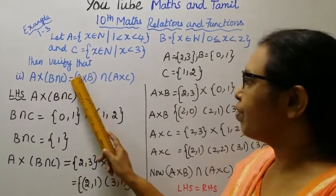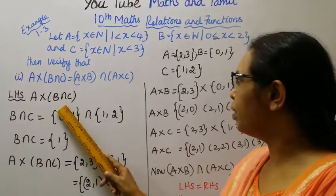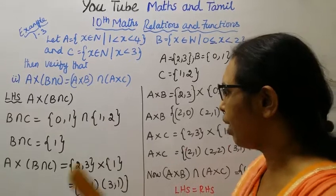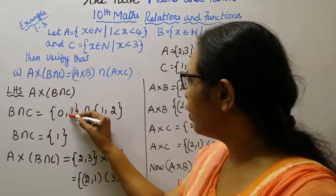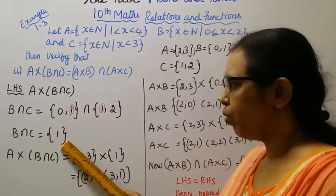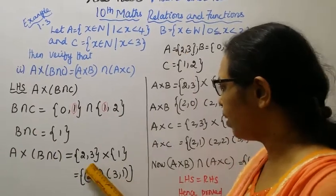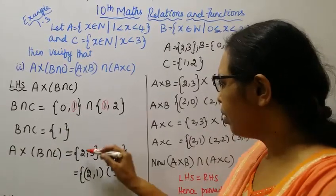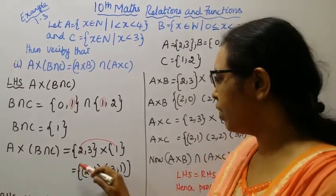First, left hand side: A cross (B intersection C). B intersection C is {1}. So A cross (B intersection C) equals {2, 3} cross {1}, which gives us {(2,1), (3,1)}.